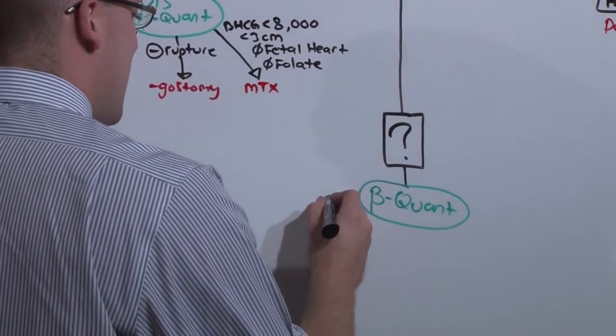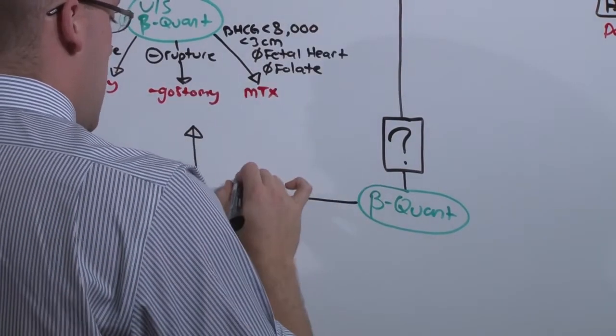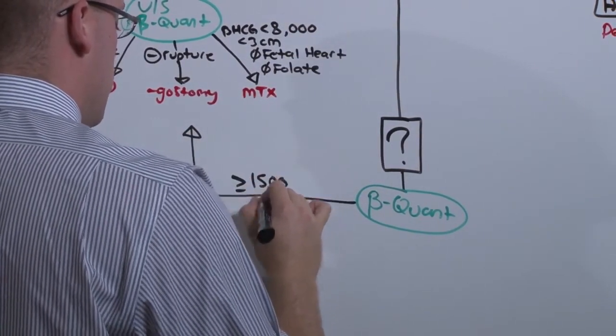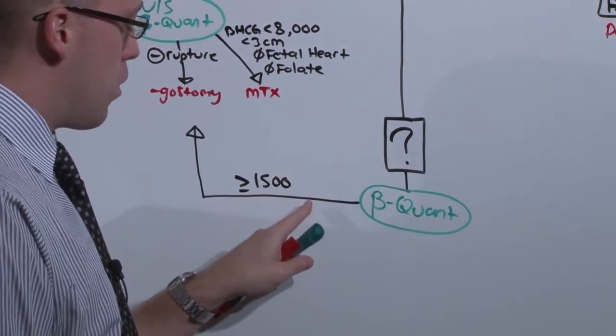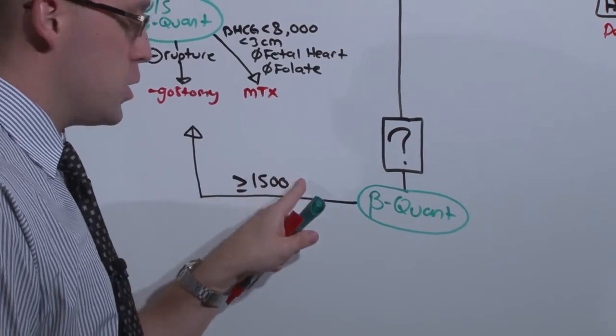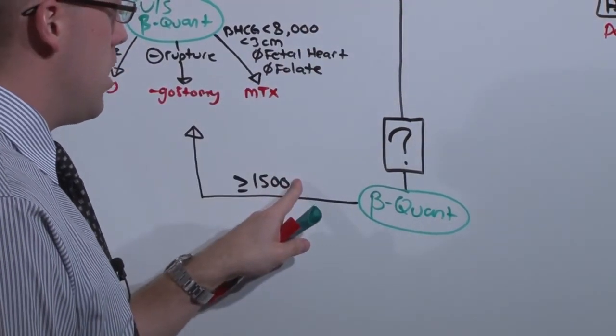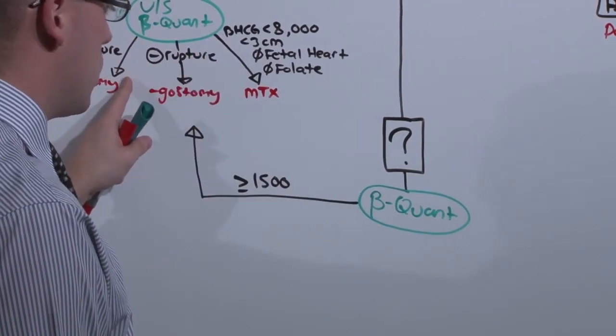So if you do not see anything on ultrasound and the beta quant is greater than or equal to 1500, you should have been able to see it. If baby is far enough along where it's making this much beta quant, you should be able to see it on transvaginal ultrasound. If you don't see anything in the uterus, you assume it is ectopic and treat accordingly.